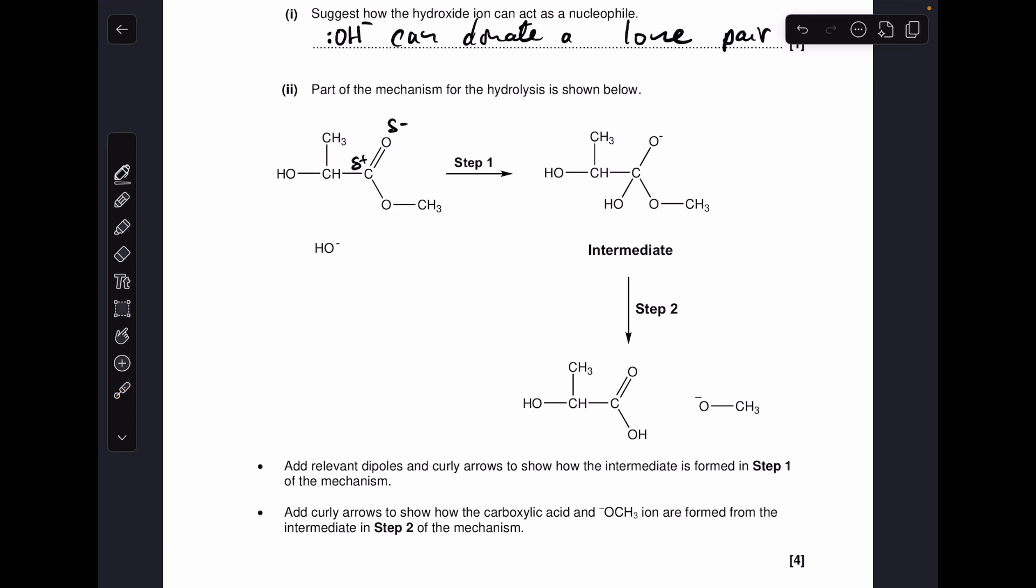So what's happened there, I'm going to draw a lone pair on that oxygen. You don't have to, but if you don't, you've got to take the curly arrow from the minus sign. So I'm just going to take a curly arrow. So a pair of electrons is going to go from that lone pair to that carbon, which is effectively going to give us this bond here.